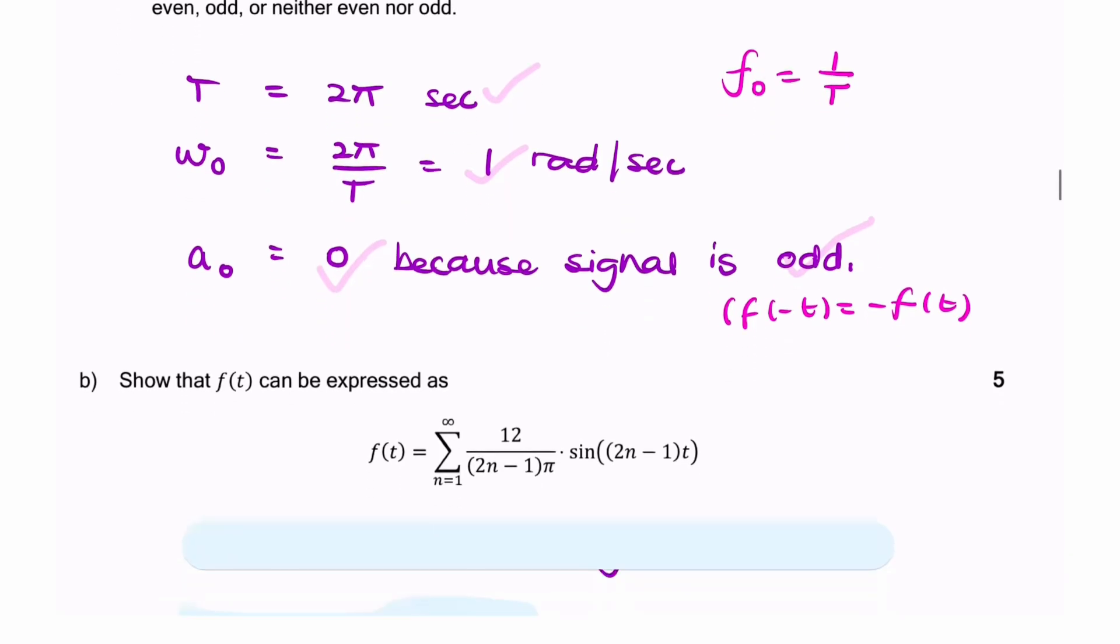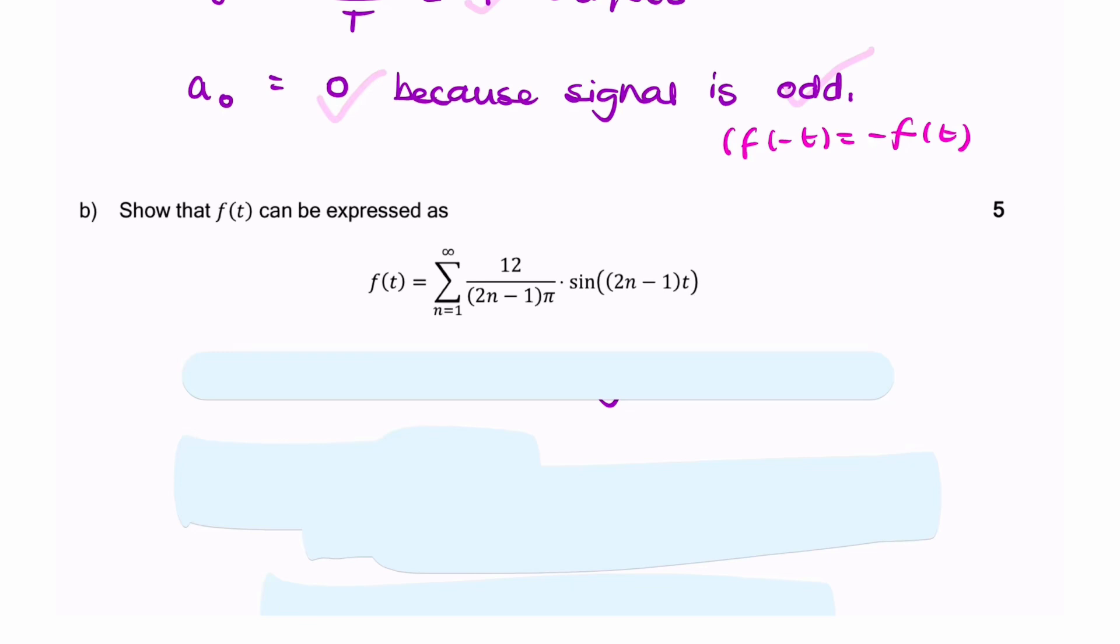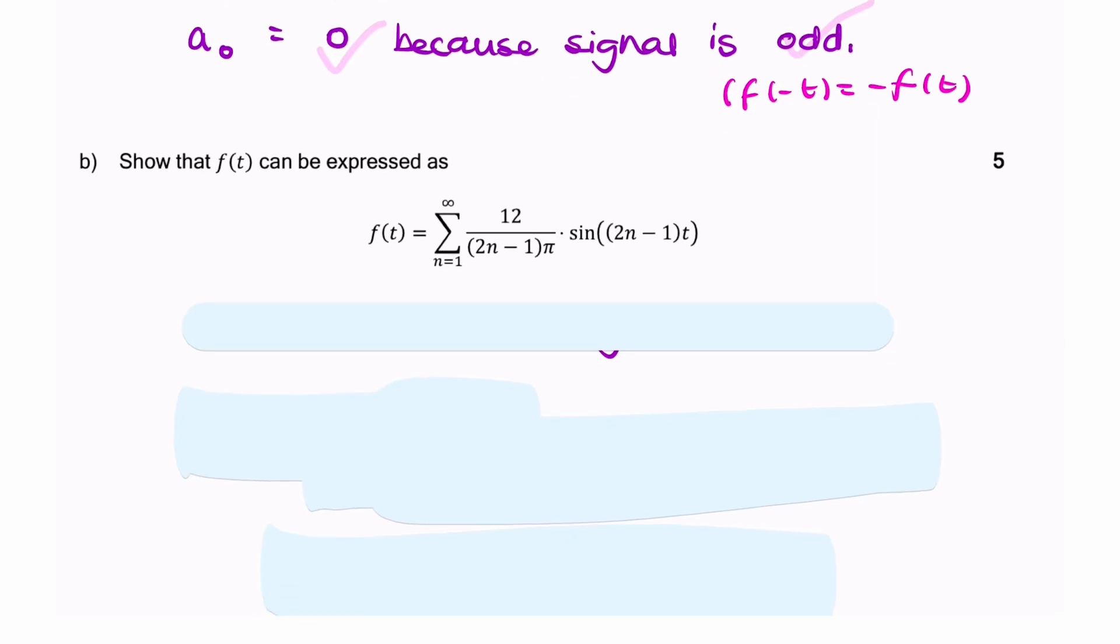Now the question goes on to say, show that f(t) can be expressed as a series. This is clearly a Fourier series. We can tell that it's odd because it's only sine components. We'd start by acknowledging that there are no cosine components because the signal is odd. aₙ is zero.